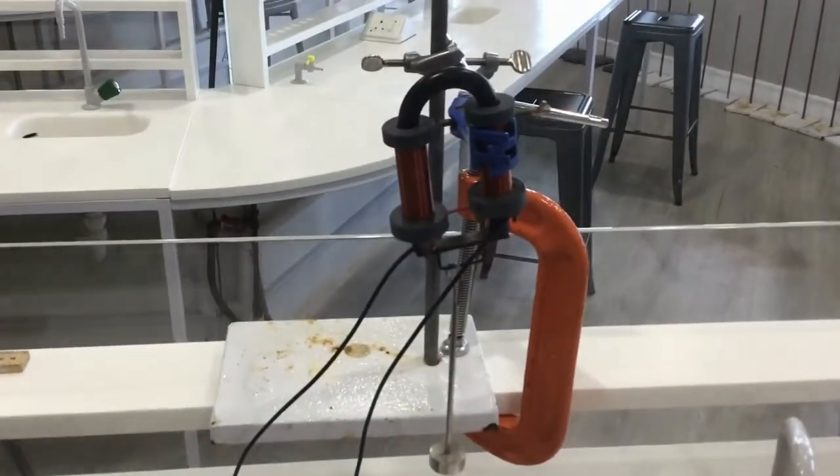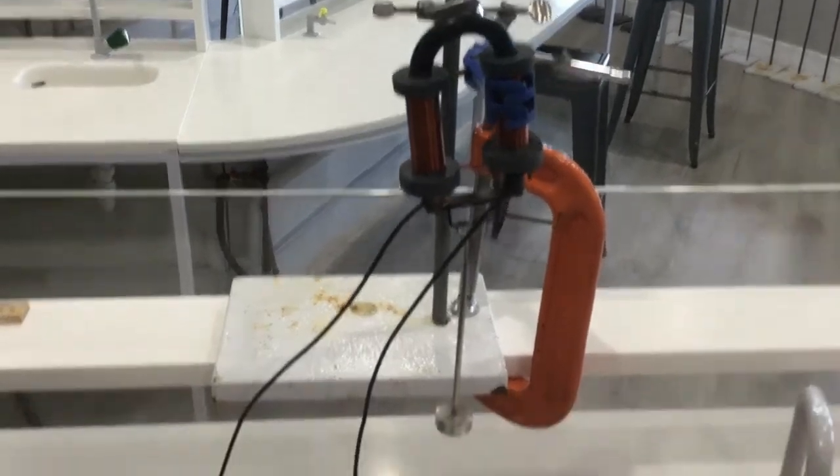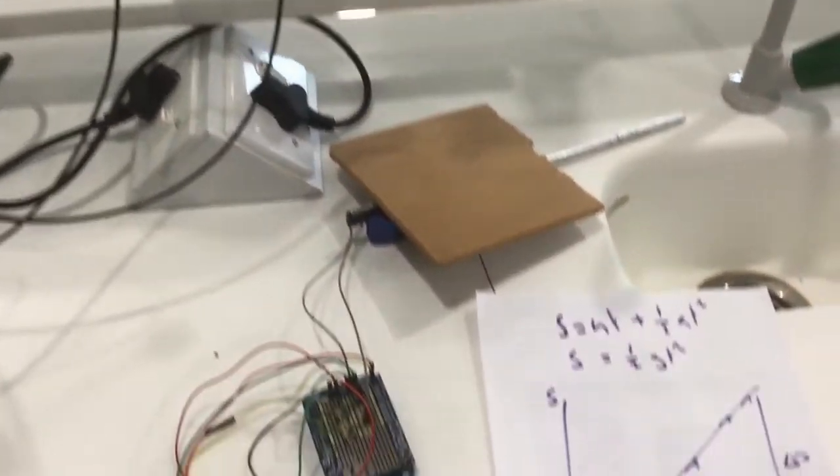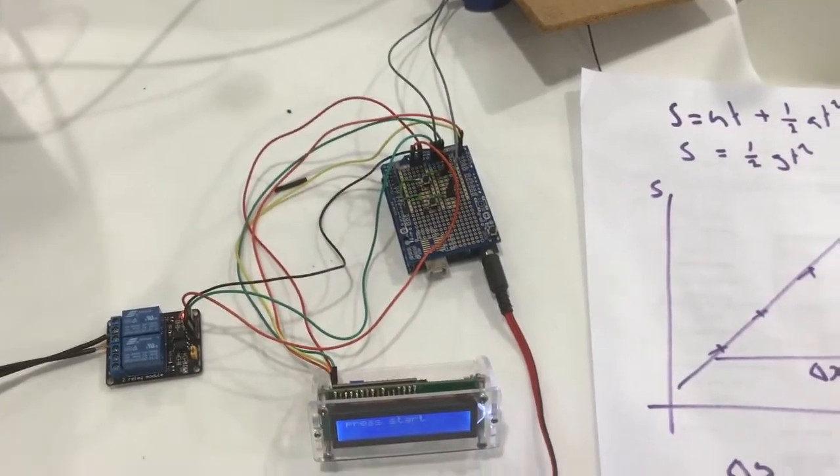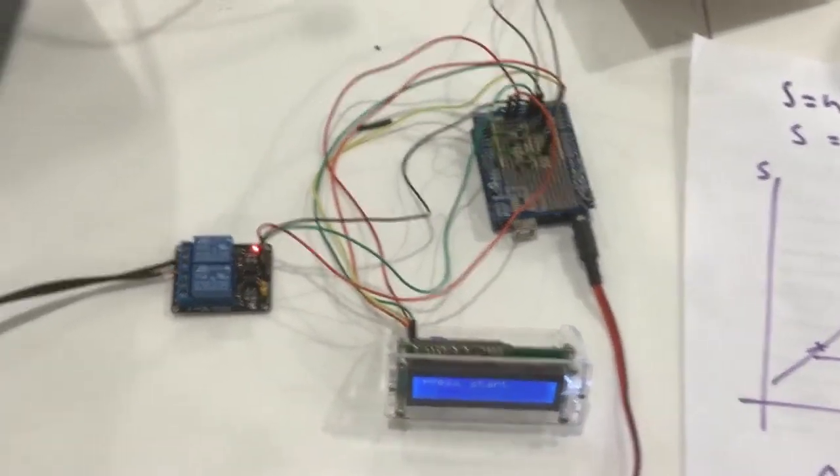And then all the students do is vary the height of the electromagnet, measure the height, plot it on a graph, and then they should be able to find the gravitational acceleration of the Earth. Okay, so let's give this a go.